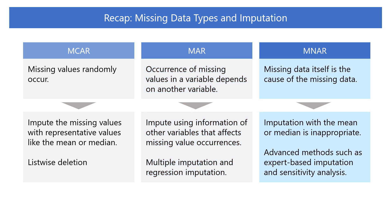In MNAR, the missing data itself is the cause of the missing data, and missing data occurrence is not random. So imputation with the mean or median is inappropriate. In addition, since MNAR is not related to other variables, we cannot estimate the value using information from other variables. Therefore, we can use advanced methods such as expert-based imputation and sensitivity analysis.